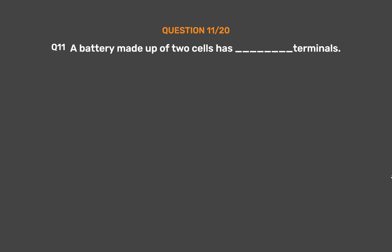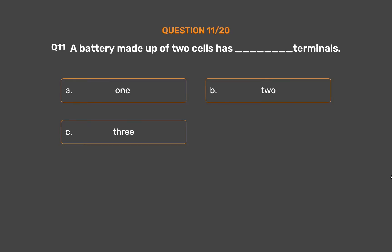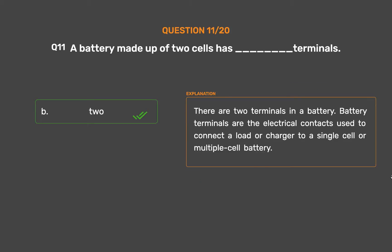Question number 11. A battery made up of two cells has blank terminals. The correct answer is Option B, 2. There are two terminals in a battery. Battery terminals are the electrical contacts used to connect a load or charger to a single cell or multiple cell battery.